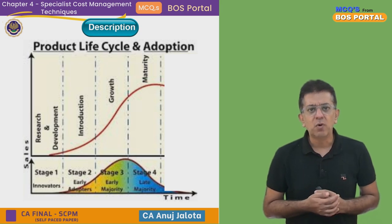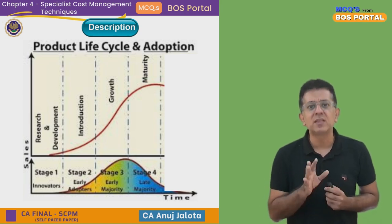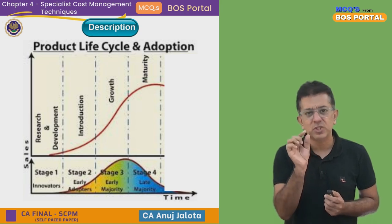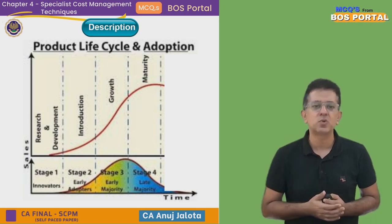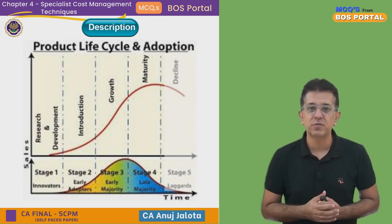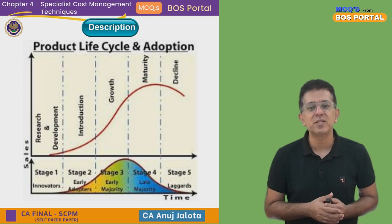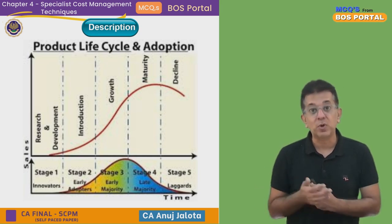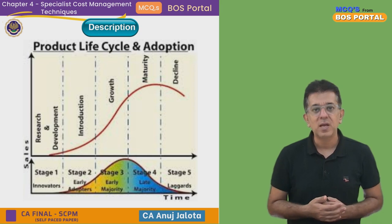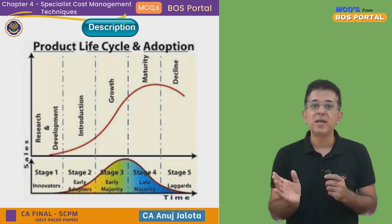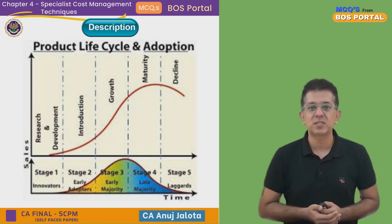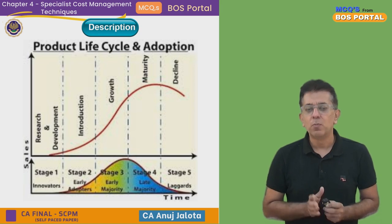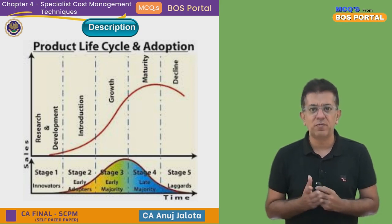Nothing lasts forever — towards the end of the maturity stage, a decline starts to come. That is the last stage of any product: the Declining Stage. Customers no longer like your product because better products have come out in the market. Sales of our product start going down, and most companies stop their production when they see there is no future in that product.